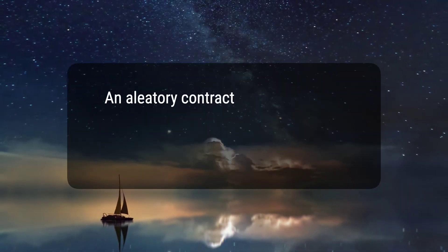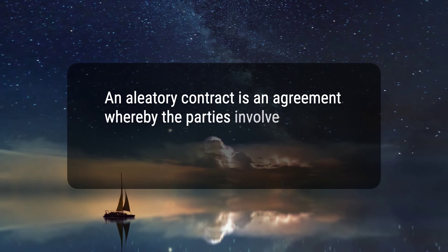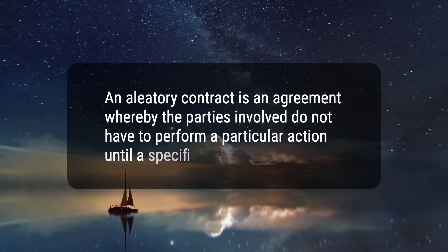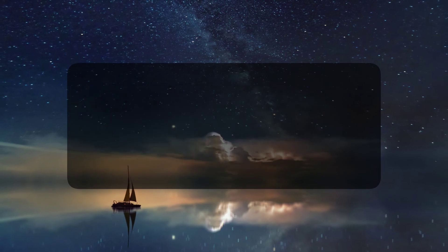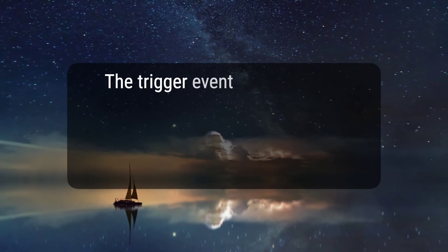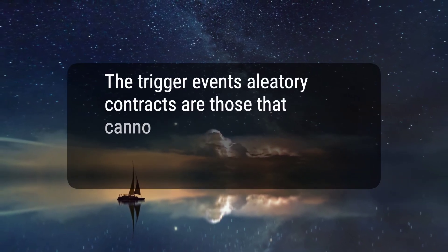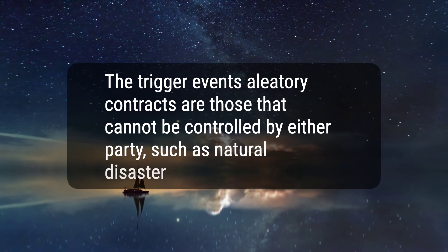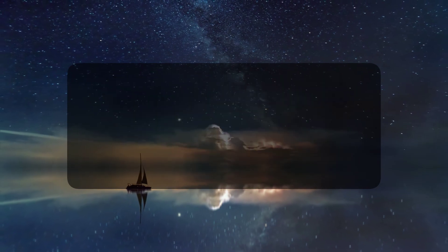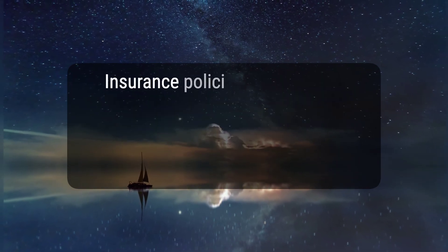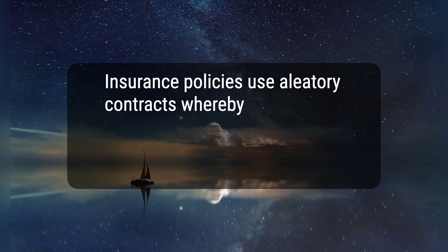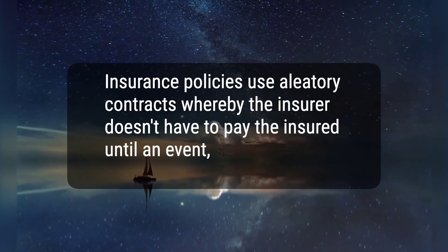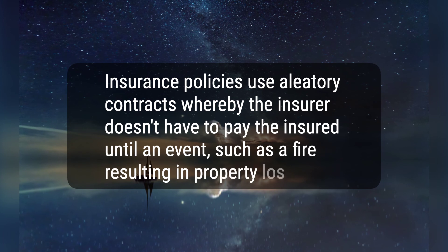Here are three key takeaways. First, an aleatory contract is an agreement whereby the parties involved do not have to perform a particular action until a specific event occurs. Second, the triggering events in aleatory contracts are those that cannot be controlled by either party, such as natural disasters or death. Third, insurance policies use aleatory contracts whereby the insurer doesn't have to pay the insured until an event such as a fire resulting in property loss.